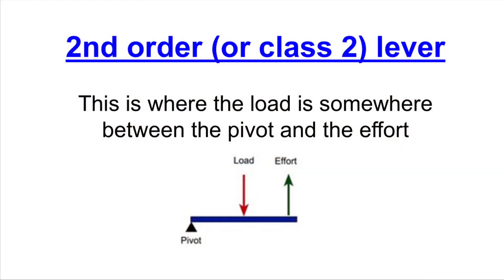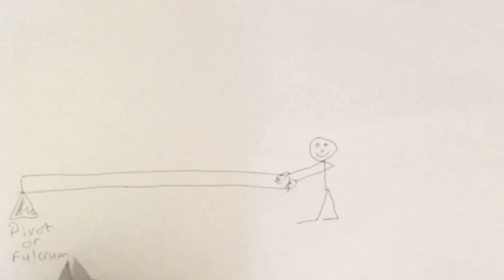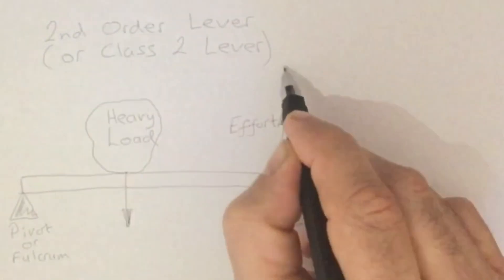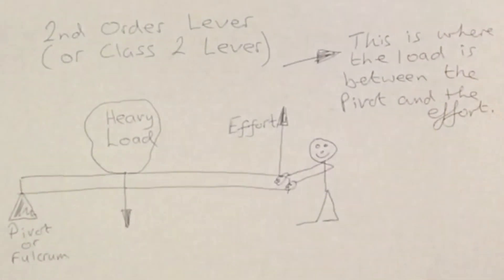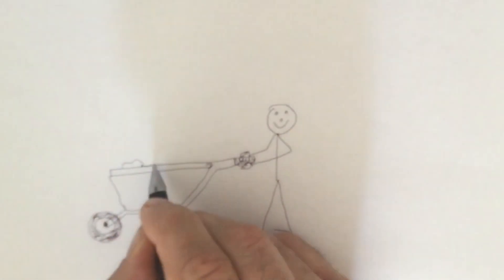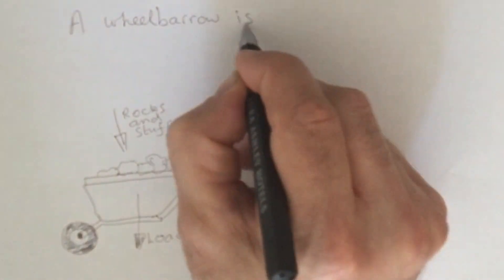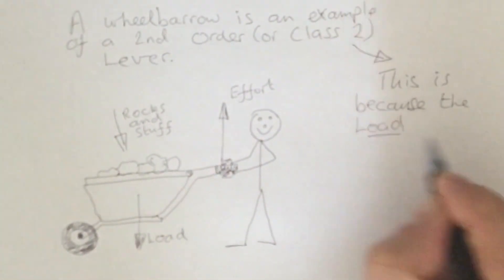A second order or class two lever is where the load is somewhere between the pivot and the effort. Just like the first order lever, the effort is further away from the pivot than the load, so the man gets more leverage and it's easier for him to pick up the heavy load. The wheelbarrow is a great example — the wheel acts as a pivot at one end, the effort is where the man lifts with the handle at the other end, and the load is somewhere in between. Because the handle and therefore the effort is further away from the pivot than the load, this gives it extra leverage.